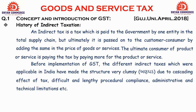One major limitation was the cascading effect of tax — meaning tax on top of tax. Suppose one tax is levied, and then another tax is levied on top of that tax. This is what cascading effect means — taxes on taxes. To eliminate this, GST was made applicable.